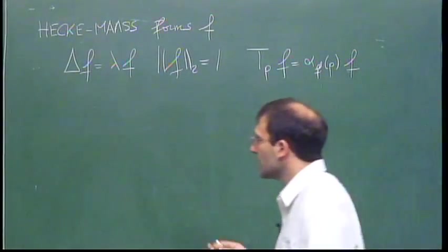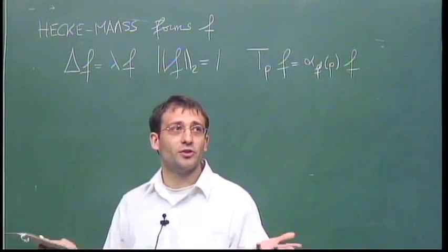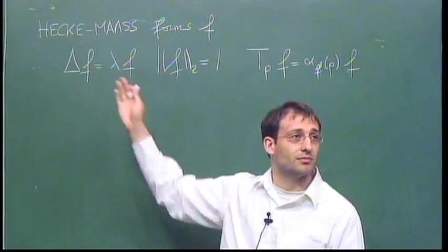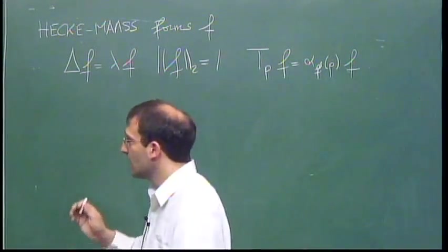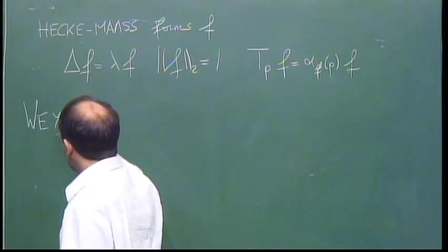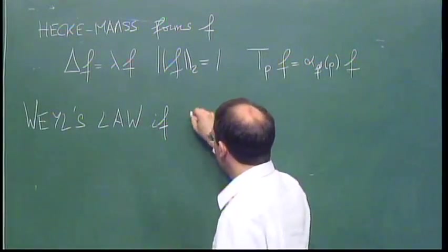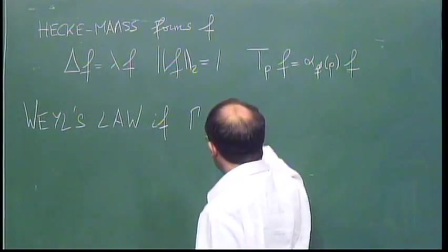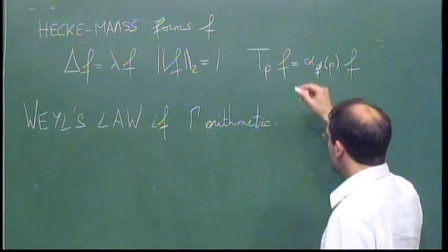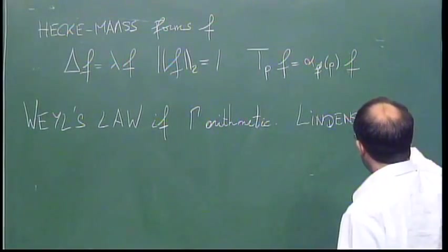Okay, and here, in this generality, there is a very important - so, I mean, this is the first question one should ask, is does such an F actually exist? And it's delicate. In fact, it follows from the Weyl law, which holds if gamma is arithmetic. So, here, in this generality, it's a great result by Lindenstrauss and Venkatesh. They have a brilliant shortcut that works in complete generality and establish the existence of this F.